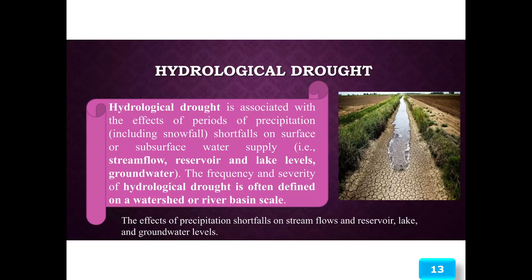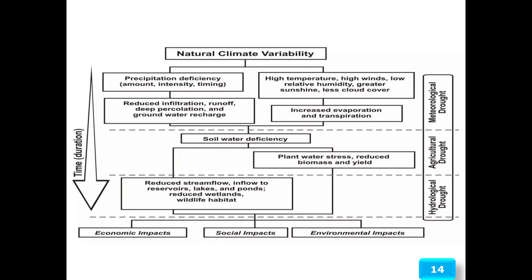The effect of precipitation shortfalls involves natural climate variability in amount, intensity, and timing, leading to reduced infiltration, runoff, deep percolation, and groundwater recharge. High temperatures, high winds, low relative humidity, greater sunshine, and less cloud cover increase evaporation and transpiration. Combined, these cause soil water deficiency, plant water stress, reduced biomass and yield, and reduced stream flow and inflow to reservoirs, lakes, and ponds, reducing water availability for plants and wildlife habitat.